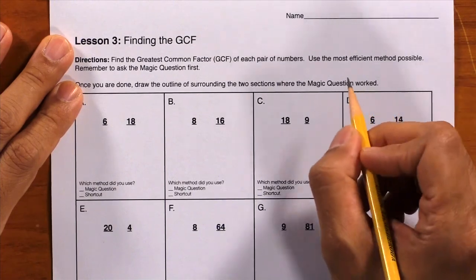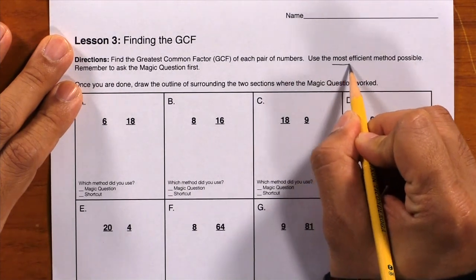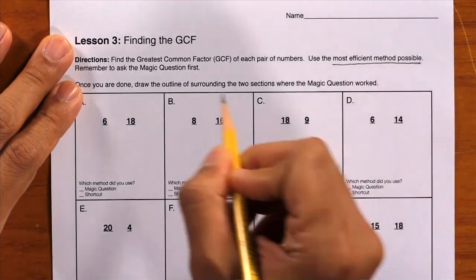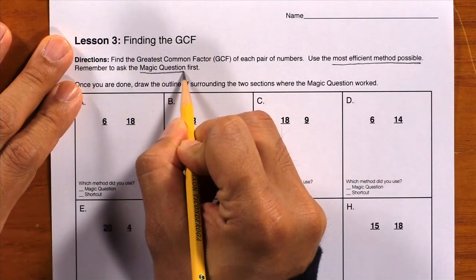Lesson 3 provides students with more practice finding the GCF so they can build fluency. Here, the directions say to use the most efficient method possible, which means they should ask the magic question first. This lesson is pretty straightforward, so let me go over just two examples with you.